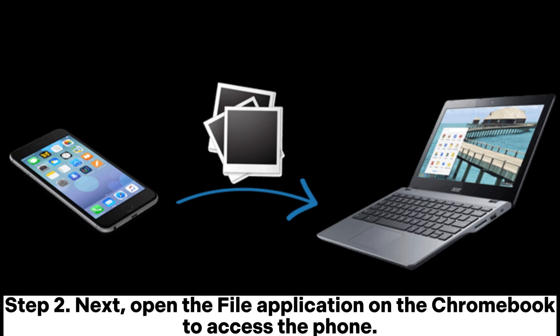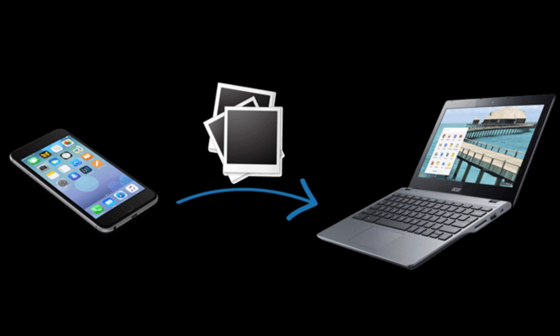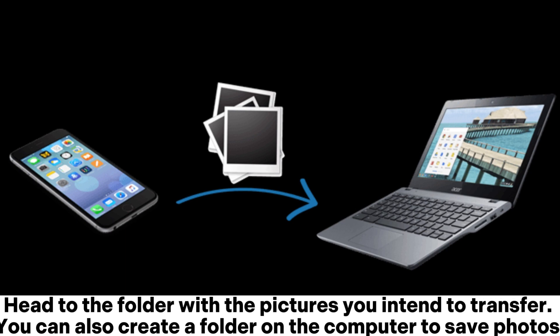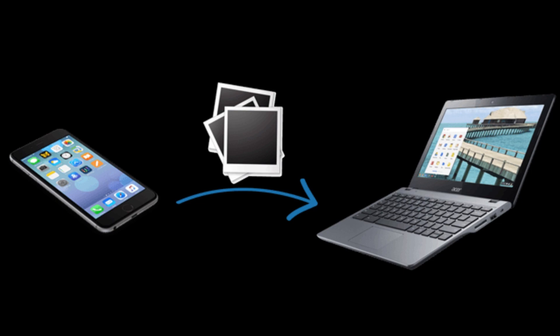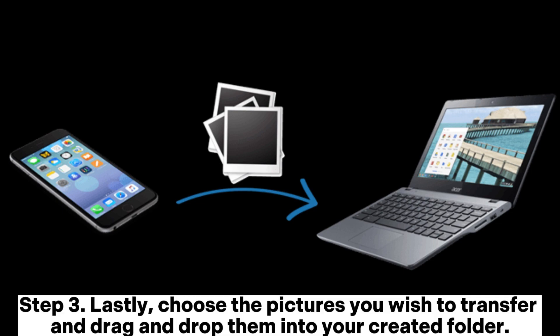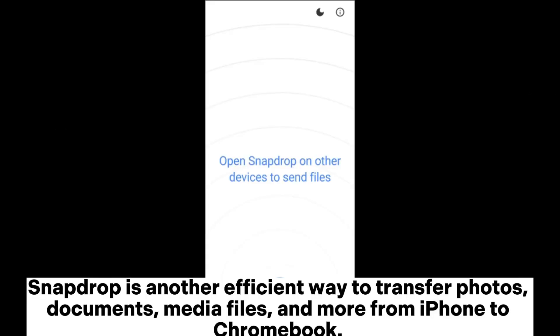Step 2. Next, open the file application on the Chromebook to access the phone. Head to the folder with the pictures you intend to transfer. You can also create a folder on the computer to save photos. Step 3. Lastly, choose the pictures you wish to transfer and drag and drop them into your created folder.